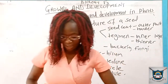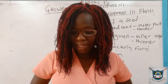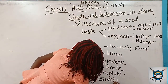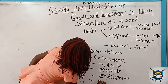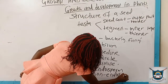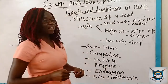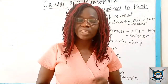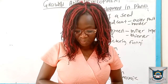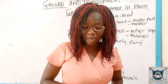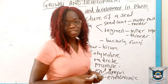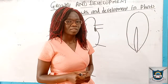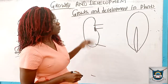The seed also has the embryo and the radicle. We are going to look at different types of seeds in a diagram. Some seeds have an endosperm and others do not. Non-endospermic seeds are usually swollen because they store their food within the cotyledons, while endospermic seeds have an endosperm where they store their food. Let us look at the diagrams of these two types: the monocot seeds and the dicot seeds.